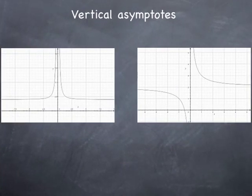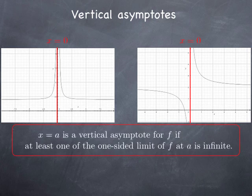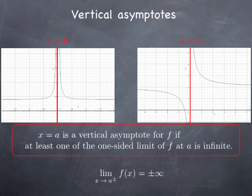The geometric interpretation of this kind of situation, as you can tell from the two functions we looked at at the beginning, is that when we get close to 0, the corresponding part of the graph gets closer and closer to the line x equals 0. We refer to this behavior by saying that the vertical line x equals 0 is an asymptote for the function f. More generally, x equals a — which is the equation of a vertical line — is a vertical asymptote for a function f if at least one of the one-sided limits of f at a is infinite. This formula should really be written as four different formulas, but if any one of these four possibilities is true, then we have a vertical asymptote.